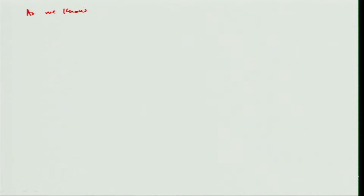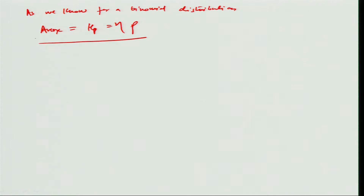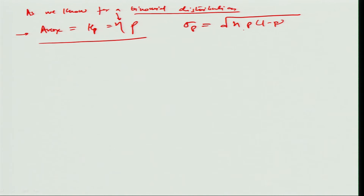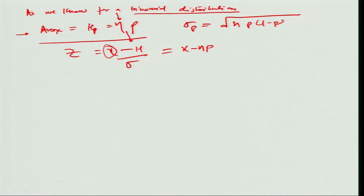For a binomial distribution, the average value μp is given by np — as proved earlier — and the standard deviation is given by √(n · p · (1−p)), where p is the fraction defective and (1−p) is the fraction good. We want to substitute these values into the z-variate, where z = (x − μ) / σ — how many times x is spread from the mean in terms of number of sigmas. Substituting from the binomial gives z = (x − np) / √(np(1−p)).